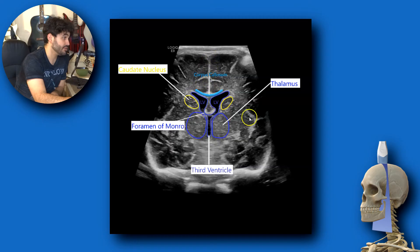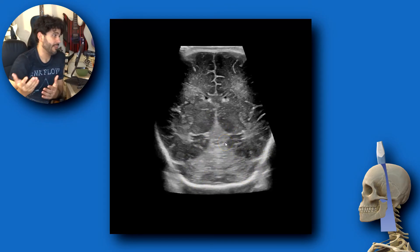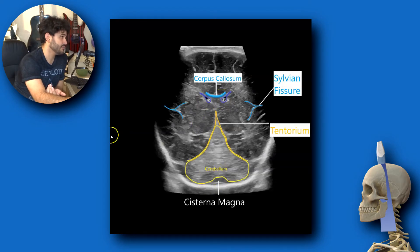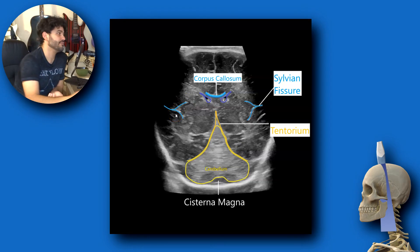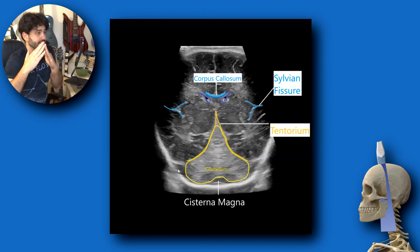Here you can also see the corpus callosum, interhemispheric fissure, and more of the sylvian fissures. Angling towards the cerebellum — a lot of people call this the Christmas tree view — you're seeing the tentorium cerebelli, which is another invagination of the dura mater separating the cerebral hemispheres from the cerebellum. Both lobes of the cerebellum are visible with the vermis at midline. You can see choroid plexus inside the lateral ventricles, the sylvian fissures as sideways Y-shaped structures separating the temporal lobes from the parietal and frontal lobes, and a small cisterna magna. The tentorium is easy to remember because it looks like a tent.